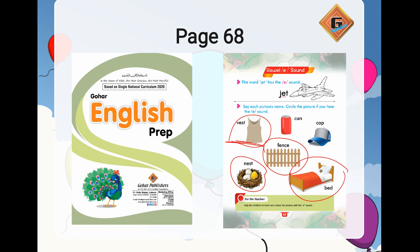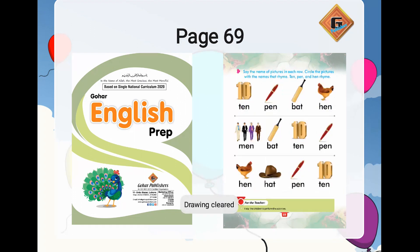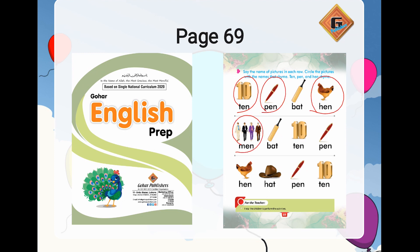Ab chalte hain page 69 pe. Yahan pe again humein rhyming words ko select karna hai. 'Say name of picture in each row. Circle the pictures with the names that rhyme.' Ten, pen, and hen — jaise ki ten hai, pen hai, aur hen — these rhyme together.